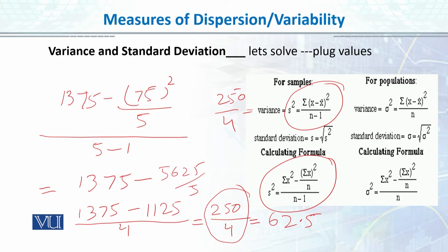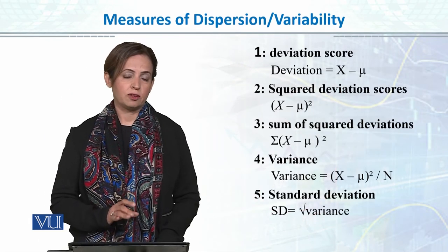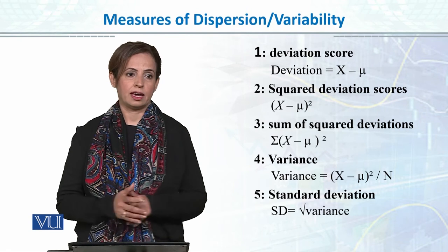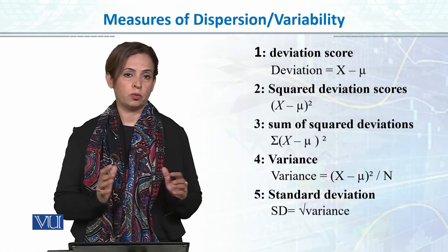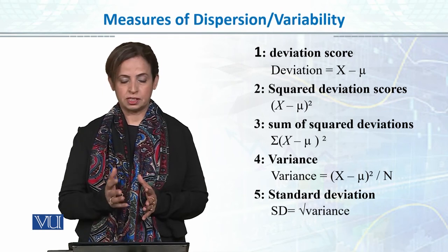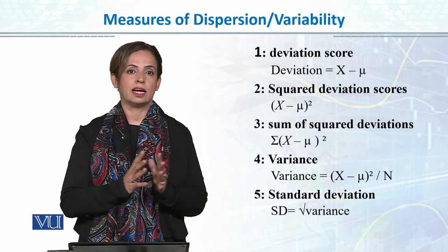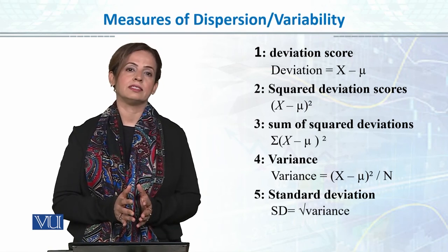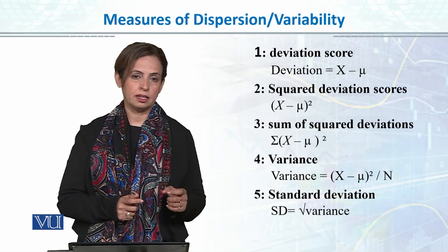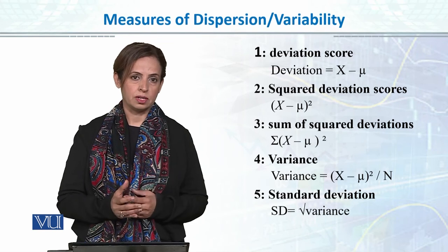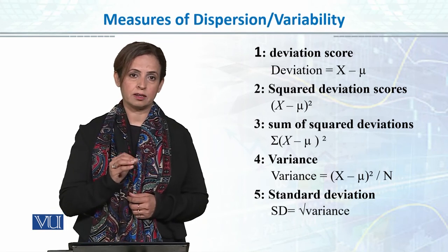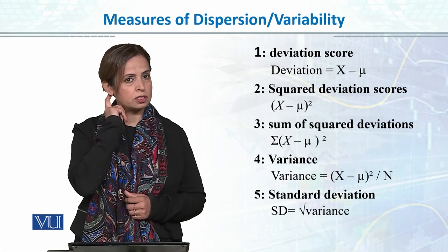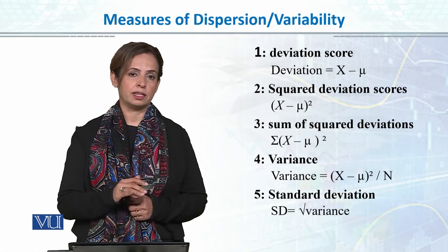We have calculated variance as 62.5. But the problem with variance is that because we square the values, the result is greatly exaggerated and increased. So to get rid of negative signs we squared the values, but the problem is the value becomes larger than it actually is. Standard deviation is the most refined and most commonly used measure in both descriptive and inferential statistics to report variability and dispersion in data.